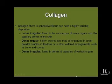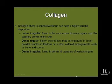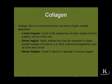Collagen, depending on its array and distribution, forms the major structural entity of connective tissue. In loose irregular connective tissue, there tend to be more cells than fibrillar protein components, typically found in the submucosa of many organs forming the lamina propria and in the papillary dermis. Dense regular connective tissue is highly organized into larger parallel bundles, classically found in tendons, bone, and the cornea. Dense irregular connective tissue has more fibers and relatively few cells, found in the underlying dermis and capsules of various organs.